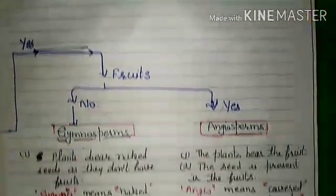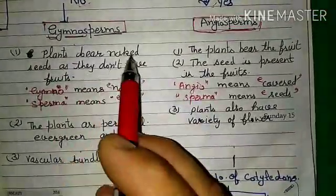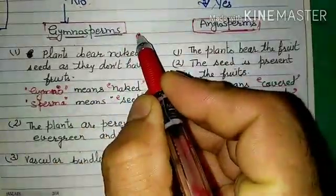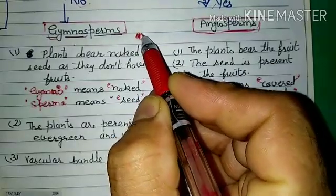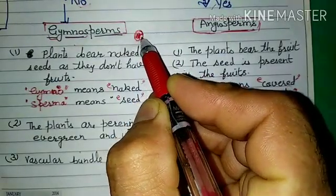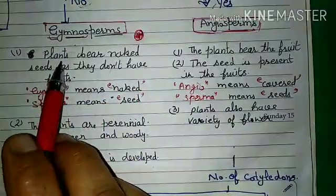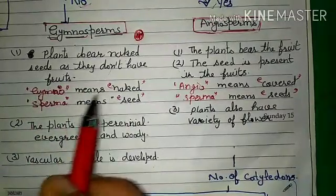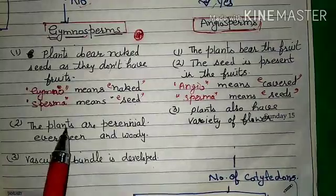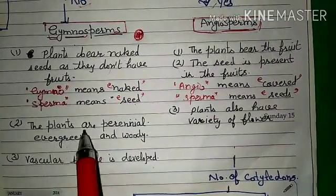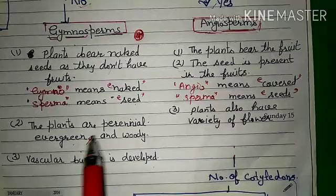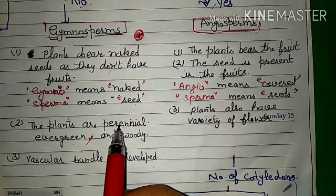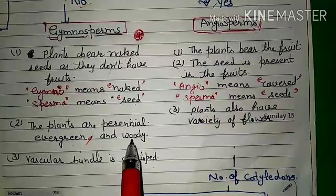Gymnosperms bear naked seeds — they have a seed coat and embryo but do not have fruit. Gymno means naked, sperma means seed. These plants are perennials that live for many years, are evergreen, and are woody. The vascular bundle is well developed. The oldest trees and the redwood trees of California are also gymnosperms.